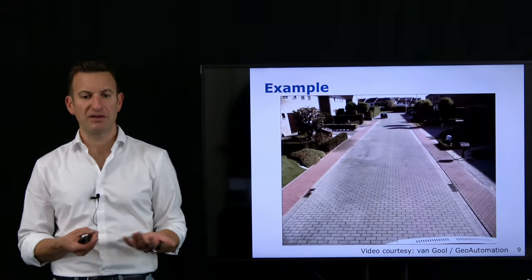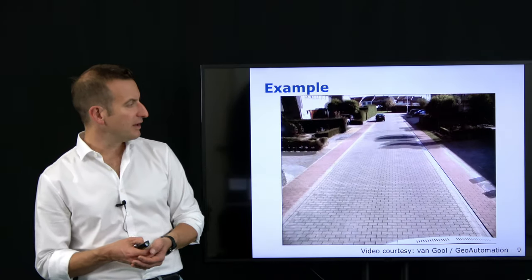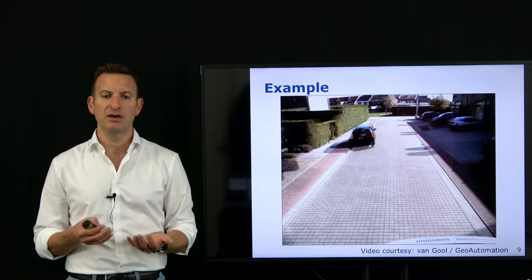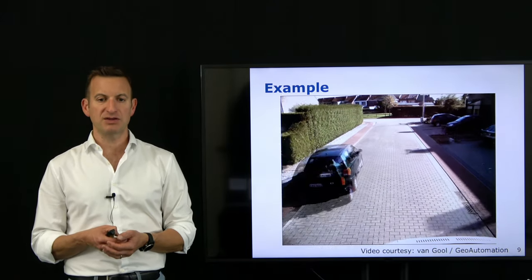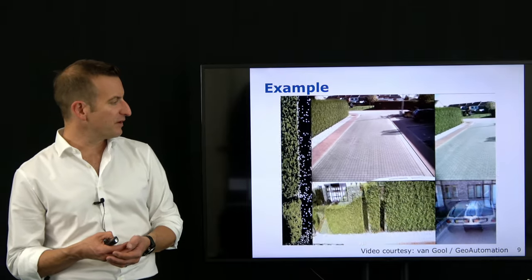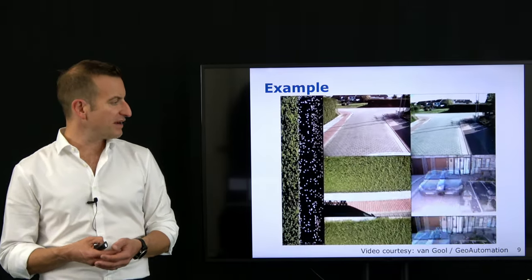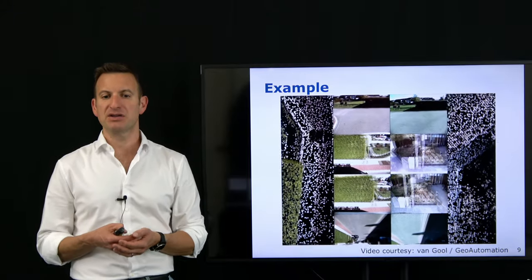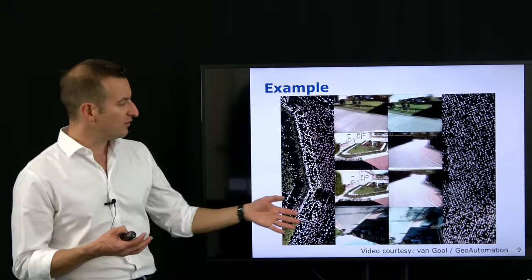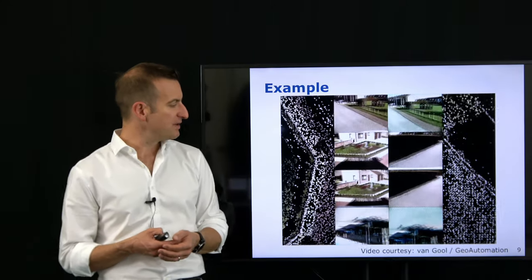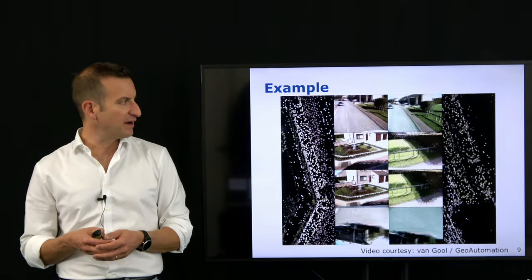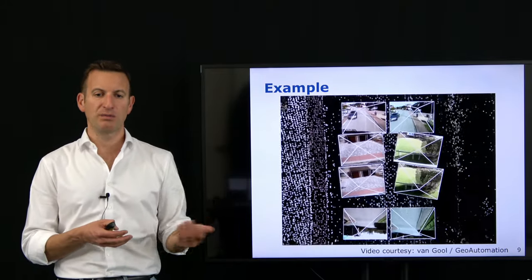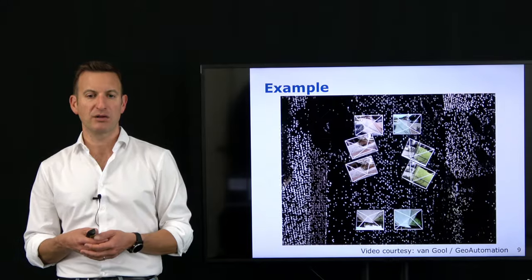Here is a small example from Luc Van Gool's lab at KU Leuven and the spin-off company Geo Automation, which performs mapping tasks using image technology. What you see is a van moving through the environment with several cameras installed. These cameras picture the surrounding environment. You can see eight camera images being taken — always pairs of two in a stereo setup: two looking to the front, one pair to the left, one pair to the right, and one pair looking backwards.